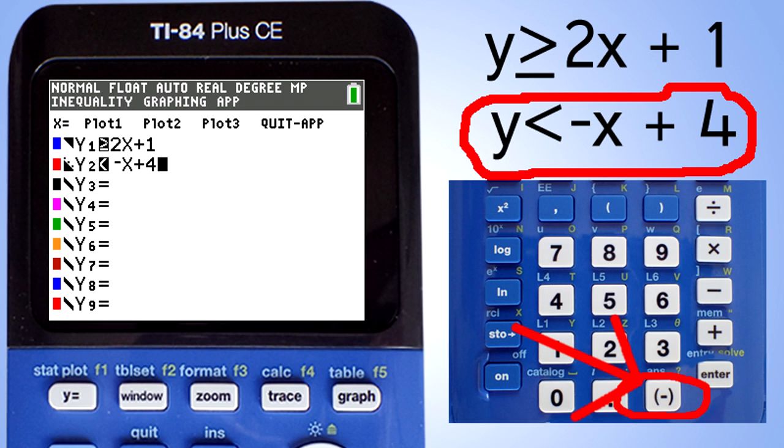Now press the right arrow key twice so we can enter the next equation. Enter negative x plus 4. Remember to use the negative sign here, do not use the minus sign.